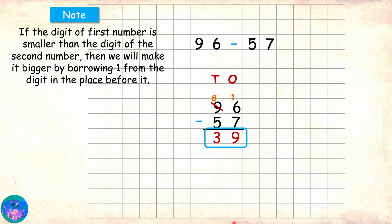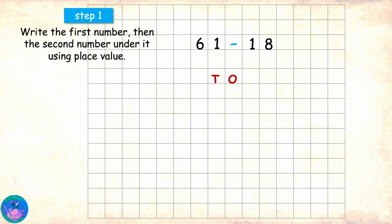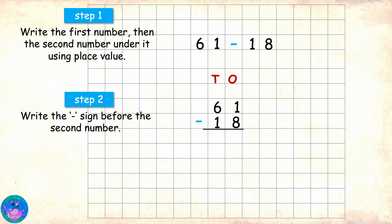Yes. Why don't you try one? Solve 61 minus 18. Sure. We first write the first number, then the second number under it using place value. Then we write the minus sign before the second number and mark the area for answers.